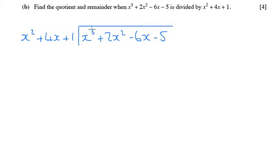First we divide x³ by x² which is x, which gets written up here. Then we times x by each of these three things here. So x times x² is x³ which goes down here. x times 4x is 4x² and x times 1 is x.